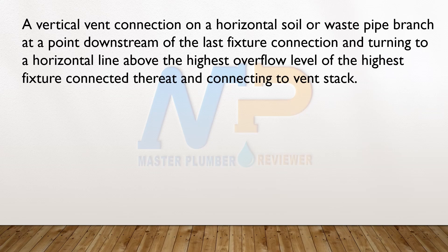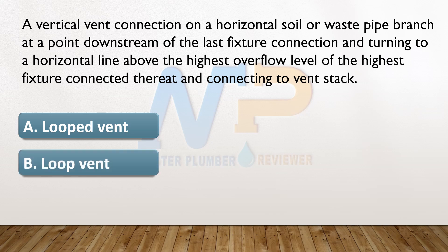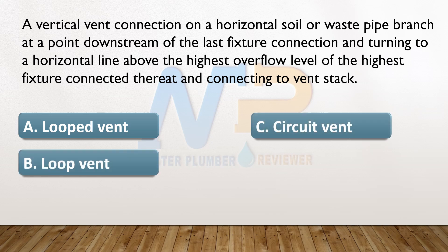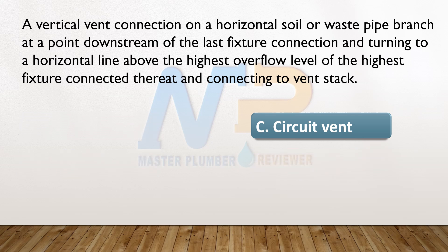A vertical vent connection on a horizontal soil or waste pipe branch at a point downstream of the last fixture connection, turning to a horizontal line above the highest overflow level of the highest fixture connected thereat, and connecting to vent stack. A. Looped vent. B. Loop vent. C. Circuit vent. D. Local vent. The answer: C. Circuit vent.